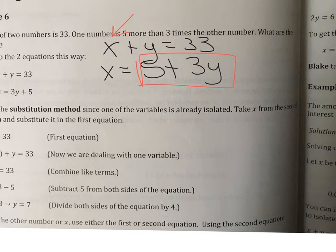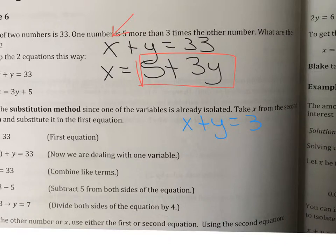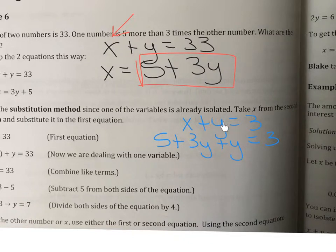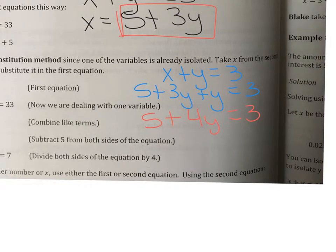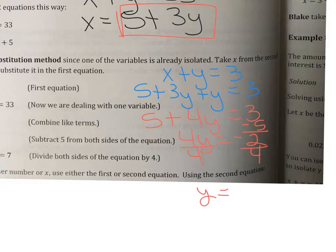We have X plus Y equals 33. We substitute the expression equal to X — which is five plus three Y — in place of X. So we get: five plus three Y plus Y equals 33. Combining like terms gives us five plus four Y equals 33. Moving the five to the other side: four Y equals 33 minus five, which is 28. Dividing by four gives Y equals seven.